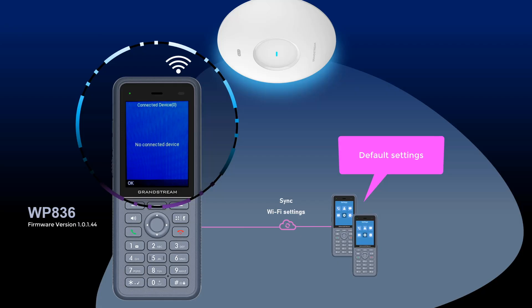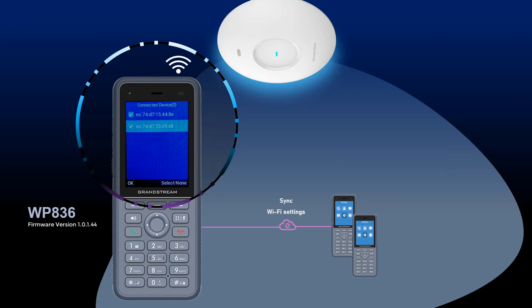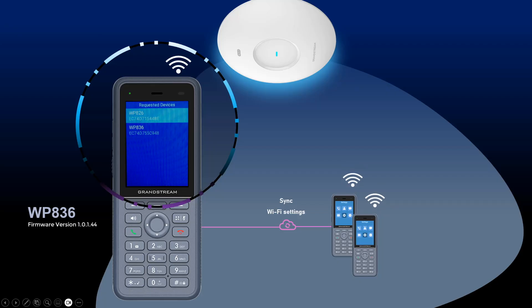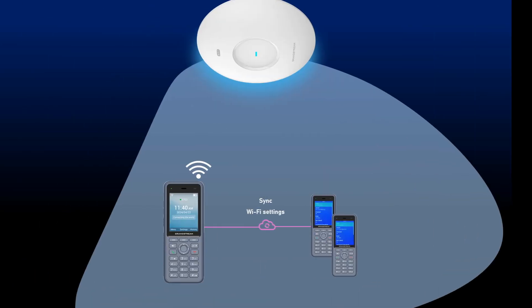If you click the Deploy softkey, it will display the devices detected through the hotspot, and from here you select and confirm the devices to provision with the profile settings. You should be able to see all the devices that have requested the configuration file in the requested devices list. Note that there is a limit of 10 WP devices that can connect at one time.